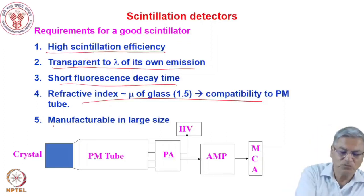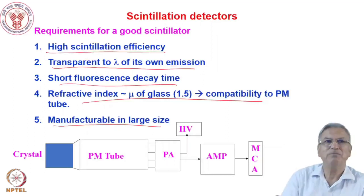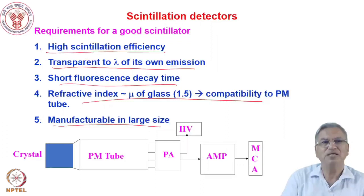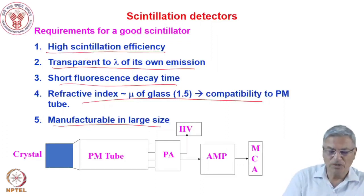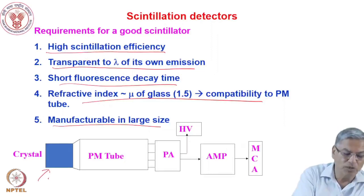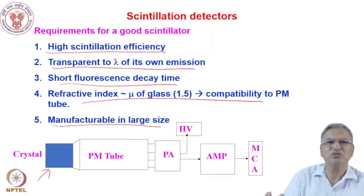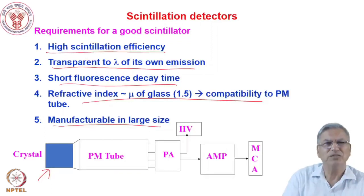Lastly, it should be possible to manufacture these crystals in large sizes. All of these are important requirements for a material to be used as a scintillator. The block diagram of the scintillation detector has a crystal — which could be 1 inch by 1 inch, 2 inch by 2 inch. There are some crystals available in 3 inch by 3 inch or even 5 inch by 5 inch, depending on your application.